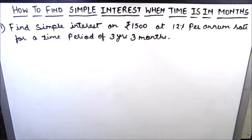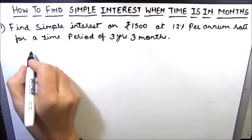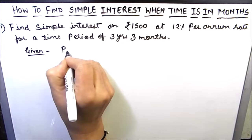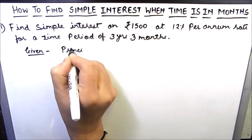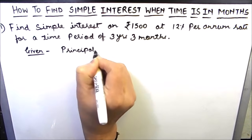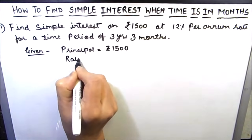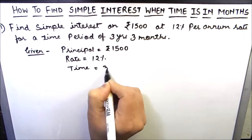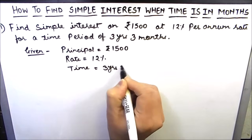The first question is: find simple interest on rupees 1500 at 12% per annum rate for a time period of 3 years 3 months. So first of all we will write what is given in the question. Given is principal amount which is rupees 1500, rate of interest is 12%, and time is 3 years and 3 months.